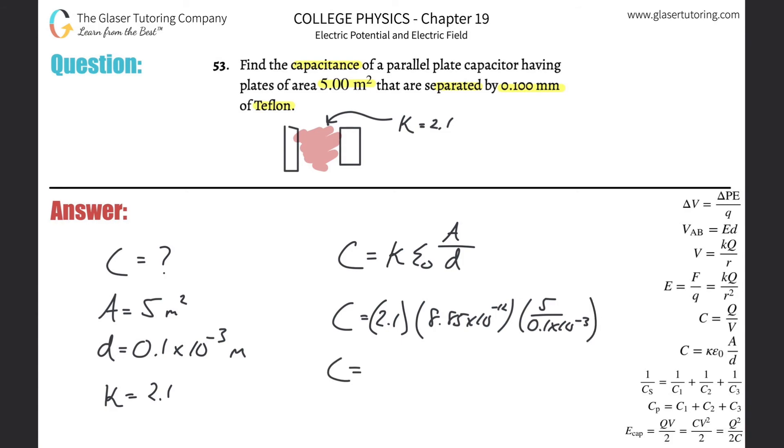And voila, we just got to calculate. So 2.1 times 8.85 times 10 to the minus 12th, multiply by 5, divided by 0.1 times 10 to the minus 3. So it looks like 9.29, 9.29 times 10 to the minus 7th, and that is in farad. Those are the units of capacitance.